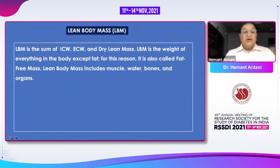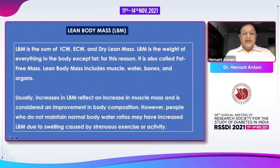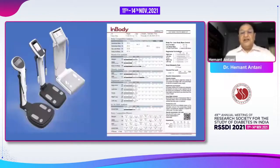Lean body mass is very important — it is the sum of intracellular water, extracellular water and dry lean mass, essentially the weight of everything in the body except fat, also called fat-free mass. It includes muscle, water, bones and organs. Increases in lean body mass generally reflect an increase in muscle mass and are considered an improvement in body composition. However, people who do not maintain normal body water ratios may have increased lean body mass due to swelling caused by strenuous exercise — an important clinical point.